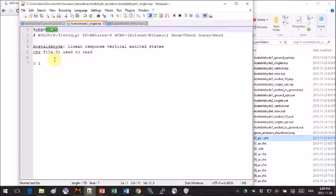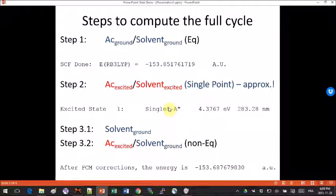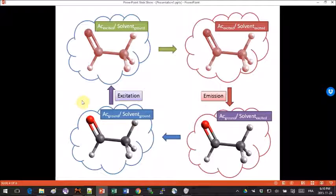I did that basically for all of them. That was step two—it's just a single point calculation, and we have the result summarized here. Now step three is a two-part process. Part one is the calculation of the solvent as if it surrounds the molecule in the ground state. That would be 3.1. And step 3.2 is we want to excite the solute molecule but preserve the solvent as it was before.